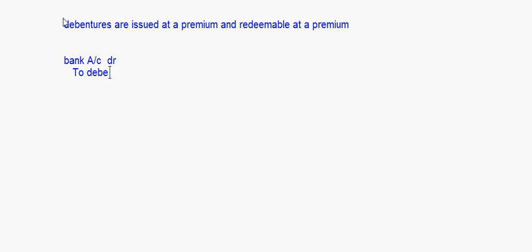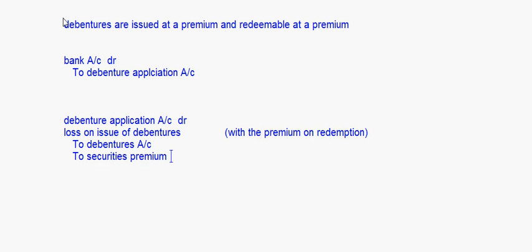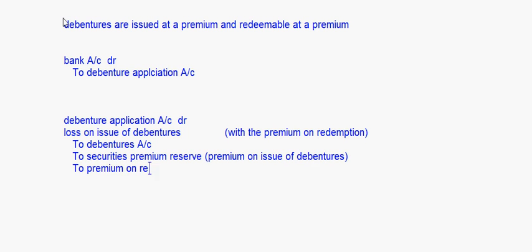Bank account debit to debenture application account with the amount of money received. Then debenture application account debit, loss on issue of debentures — this is with the premium on redemption — and then we will write to debentures account, to securities premium reserve — this is the premium on issue of debentures — and then to premium on redemption of debentures account.